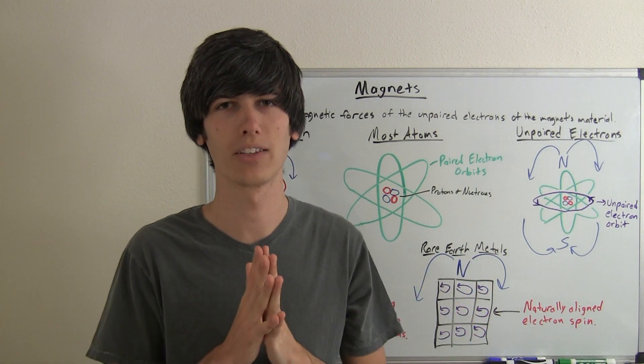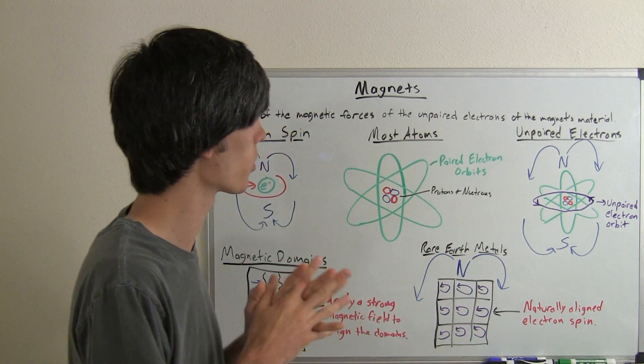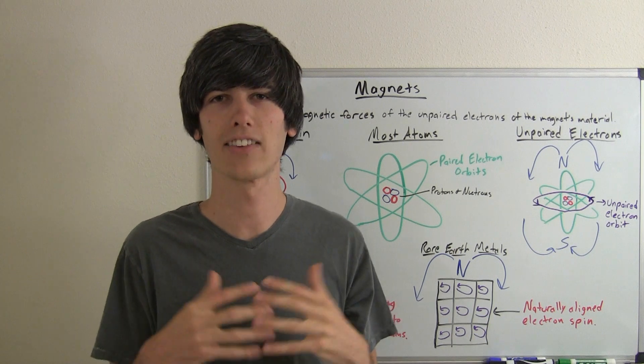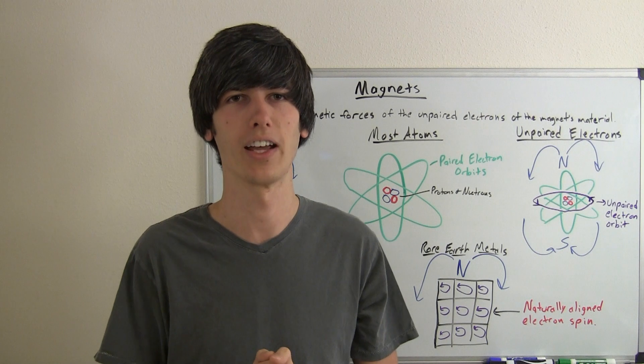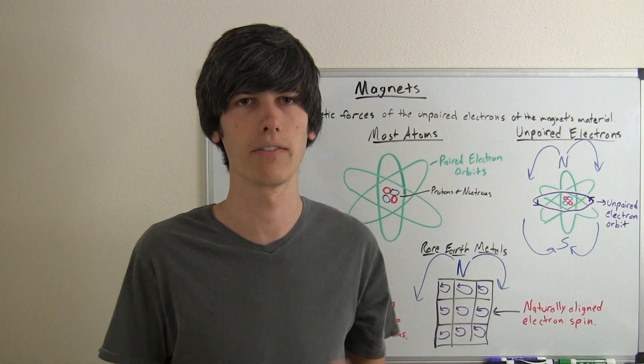So that's the basics of how magnets work. There's probably still some more questions as far as spin but it gets a little deeper into quantum mechanics and so I just wanted to oversimplify it so you get a general understanding. If you have any questions or comments feel free to leave them below.